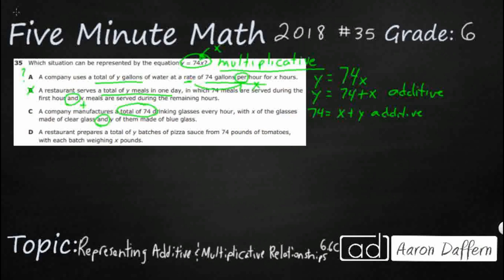The x is the clear, the y is the blue. That's not what we need. So that is not it. Now, D is kind of a tricky one here. A restaurant prepares a total of y batches of pizza sauce from 74 pounds of tomatoes with each batch weighing x pounds.